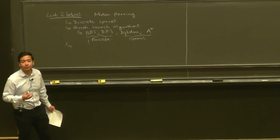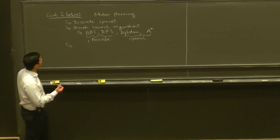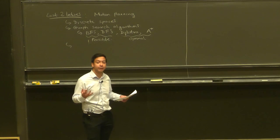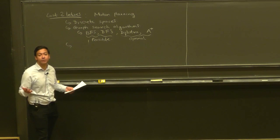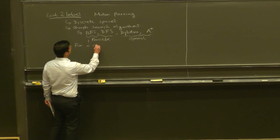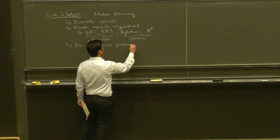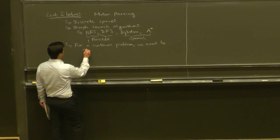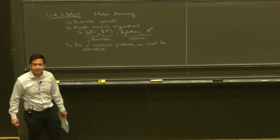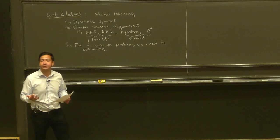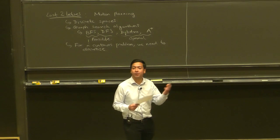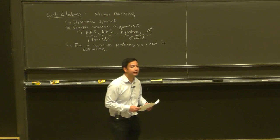These algorithms are extremely powerful, but they have some pretty important shortcomings. The main one is the assumption that everything is discrete. If we're thinking about motion planning for an actual robotic system like a drone, we're operating in a space that's inherently continuous — not discrete. So for a continuous planning problem, we need to discretize our space somehow. For higher-dimensional systems, if you discretize, you have an exponentially scaling number of states.